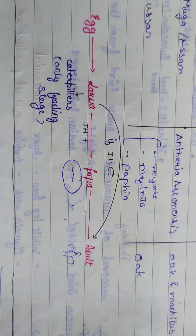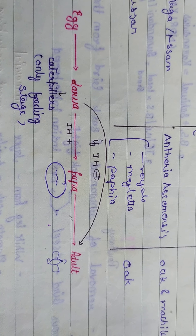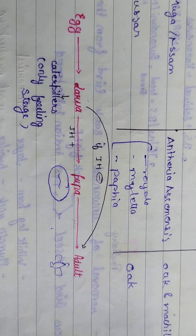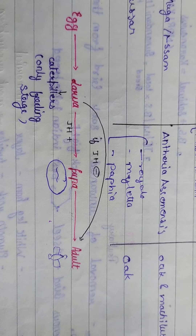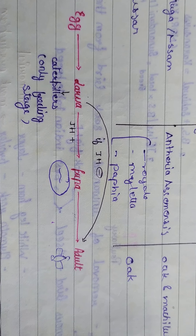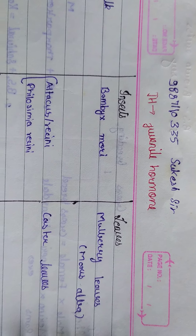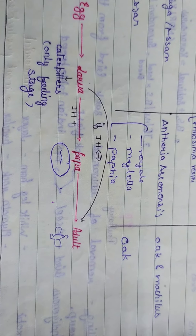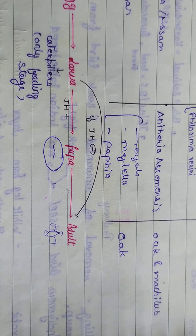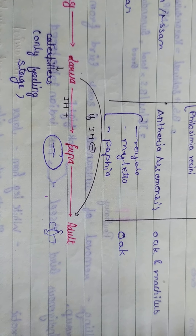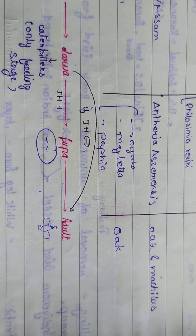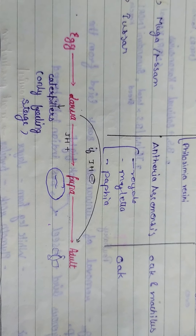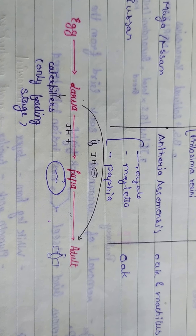The life cycle of the silkworm proceeds as: egg changes into larva, larva into pupa, and pupa into adult. If the juvenile hormone is absent, the larva is directly transformed into the adult. If the juvenile hormone is present, the complete life cycle of egg, larva, pupa, and adult occurs.